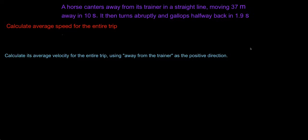This problem tells us that there is a horse that is cantering away from his trainer in a straight line, moving 37 meters away in 10 seconds, and then turning around and then coming back halfway in 1.9 seconds.